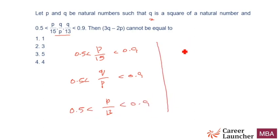Unfortunately, sometimes students assume this means 0.5 less than P/15 less than Q/P less than P/13 less than 0.9. This is incorrect.